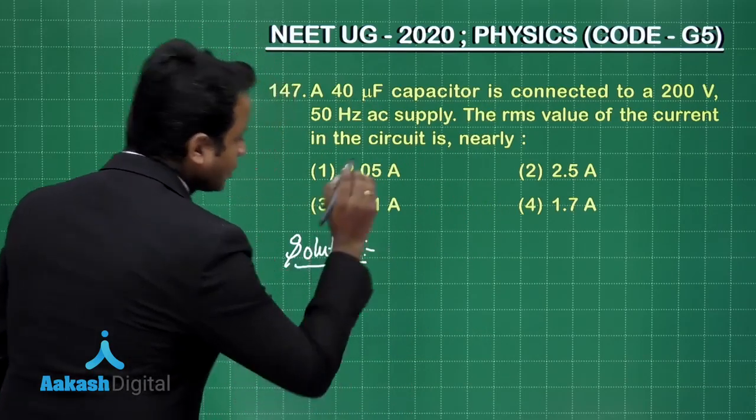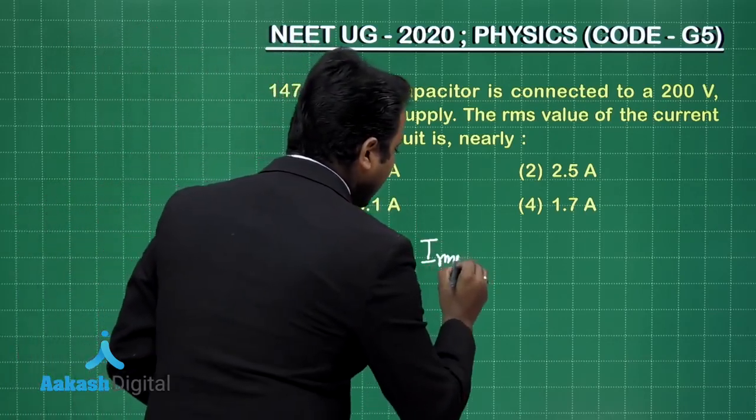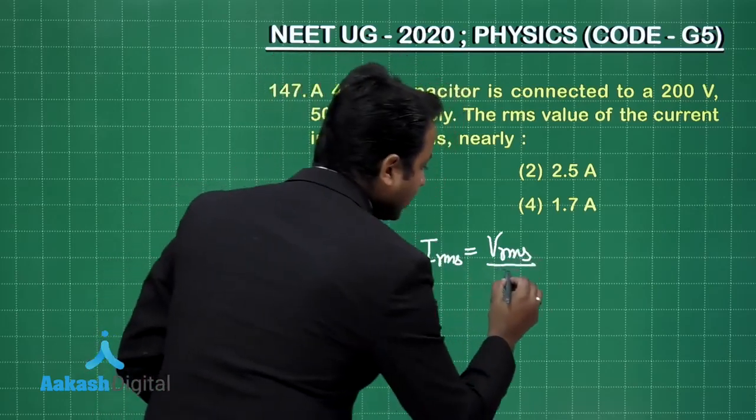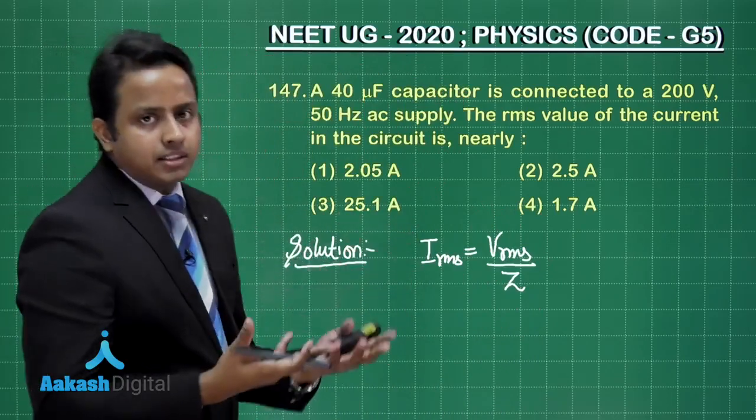This question is from the chapter alternating current and you should remember one thing. The RMS value of current should be the RMS value of voltage divided by the impedance of the circuit. Now, in this circuit only capacitor is present.